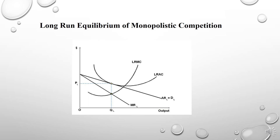Now we'll learn about the long run equilibrium in monopolistic competition. As you can see in this picture, in the long run, a firm in the monopolistic competitive market will produce the amount of goods where the long run marginal cost curve intersects marginal revenue (MR). The price will be set where the quantity produced falls on the average revenue curve. The result is that in the long term, the firm will break even.